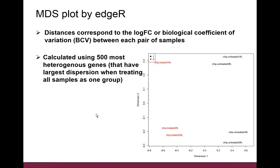This is the MDS plot, and this is from the edgeR tool. The distances in this plot correspond to the log fold changes or biological coefficient of variation between each pair of samples, and it's calculated using the 500 most heterogeneous genes — those with the largest dispersion when treating all samples as one group.